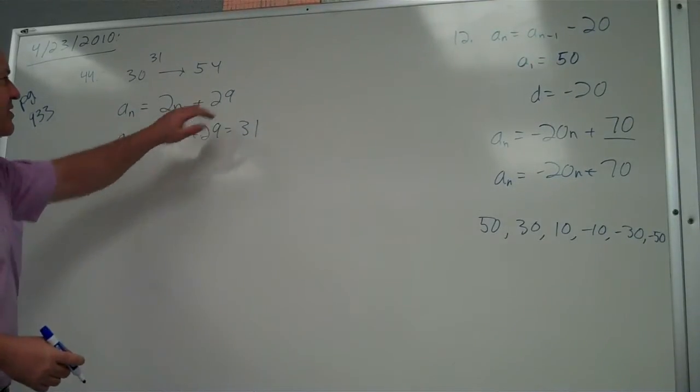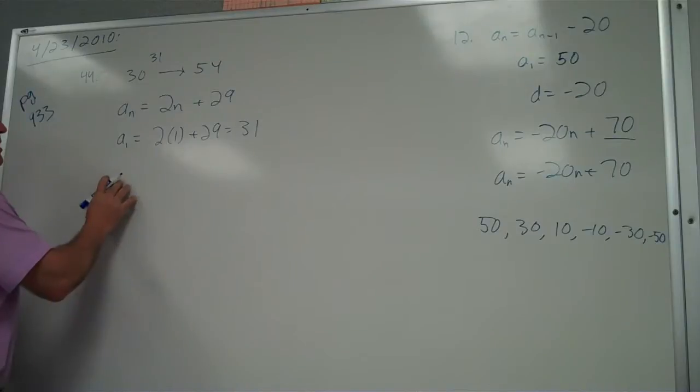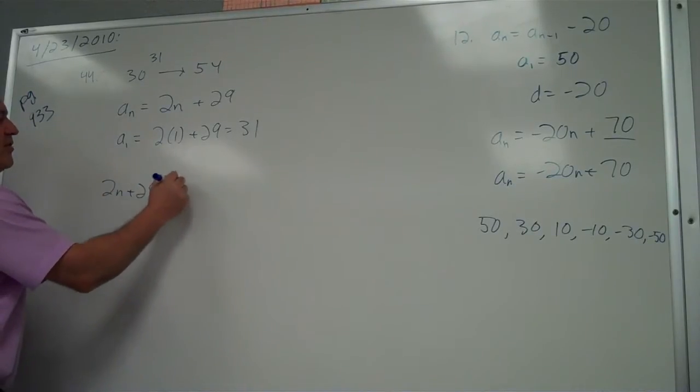Okay, what does n have to be for this to get to 53? When does 2n plus 29 equal 53?